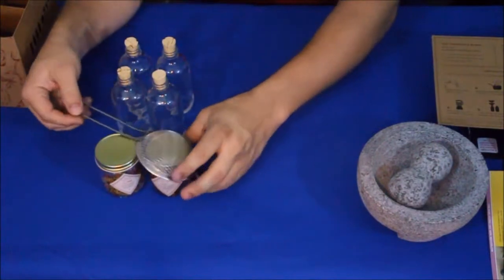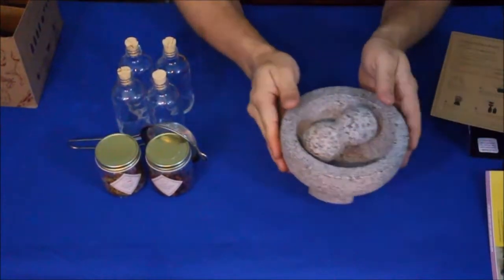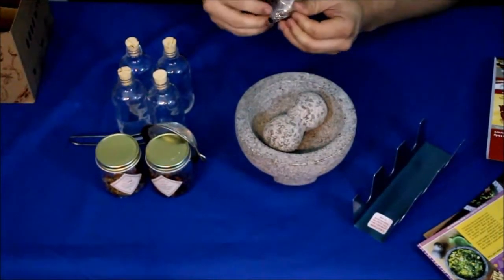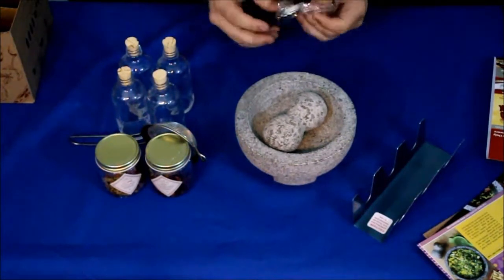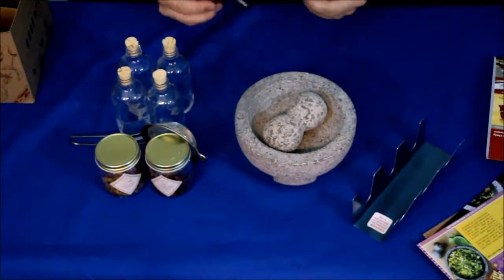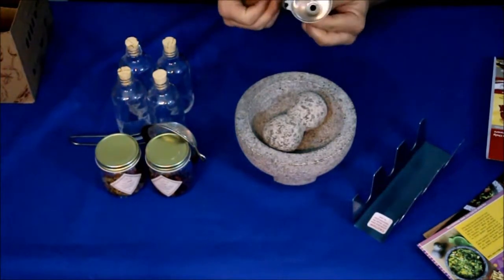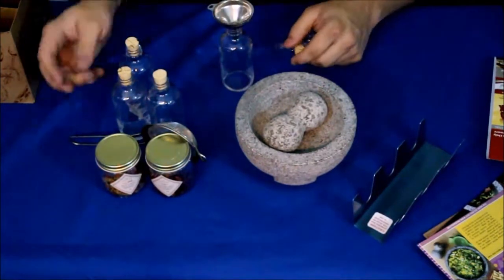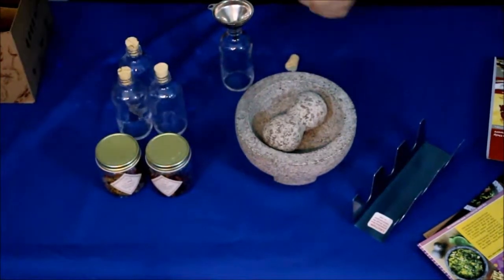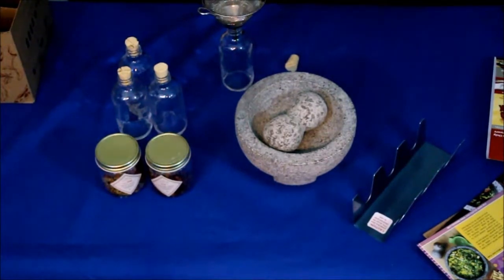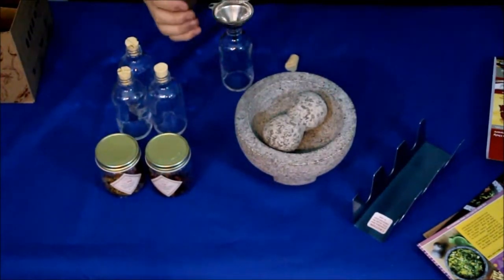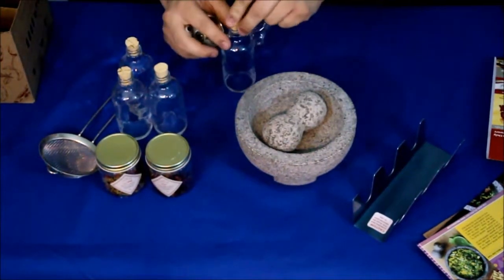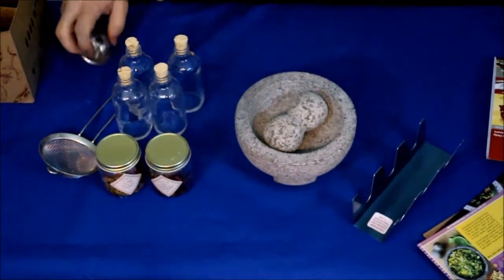We've got the seasonings there, the bottles, the strainer, the pestle and grinder. One thing I almost didn't see was here's the little funnel to go ahead and fill up your vials. When you're doing it, you can sit there and pour it through your strainer and then into your funnel so you're not dumping it all over the place when you're trying to fill it up.